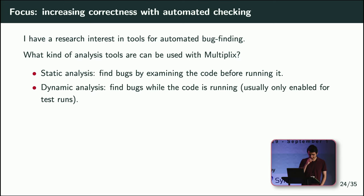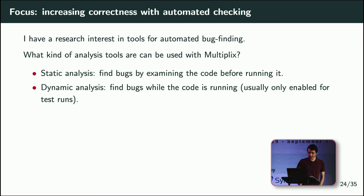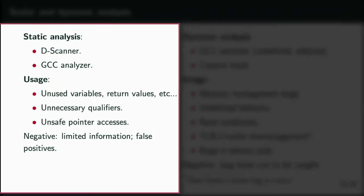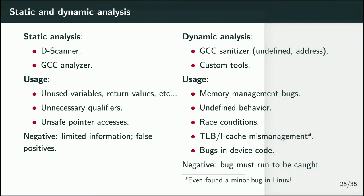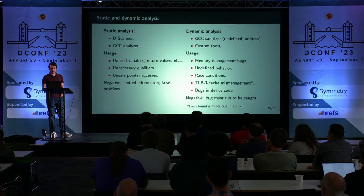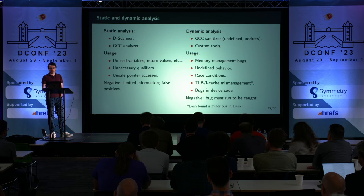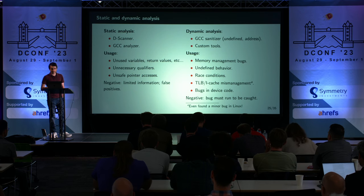I also have a general interest in tools for automated bug finding. For static analysis, there's D-Scanner and the Clang analyzer, which can be used on D via -oddc. This gives you things like unused variables, unused imports, and unused qualifiers — useful for finding things you don't need. The Clang analyzer can do more aggressive analysis like null pointer access detection. I do find the Clang analyzer has trouble with D since it's made for C, so I tend to stick to a simpler style of D for that reason.